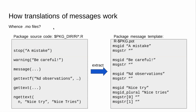So where do we get these MO files from? We can work backwards from writing the code to getting the MO file. Within your source code you'll have messaging functions like stop, warning, message. The other two are gettextf — a way of doing templated translations, basically like sprintf but built for translation — and under the hood gettextf runs sprintf on the output of gettext. There's also ngettext, which is used for plural translations.